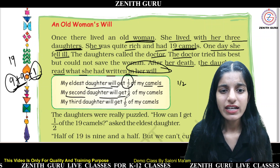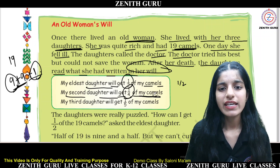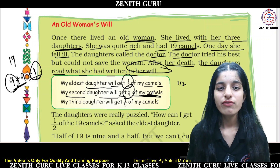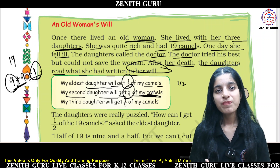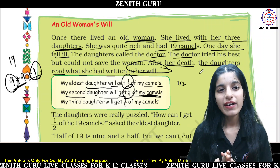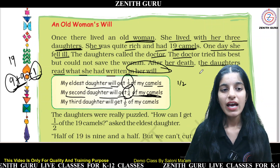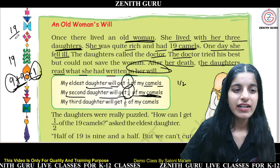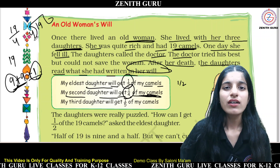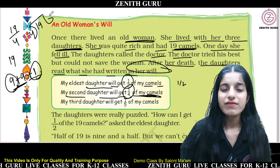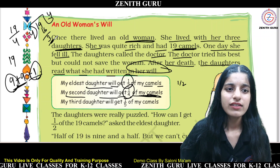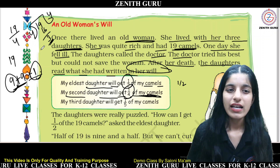My second daughter will get one-fourth (1/4) of my camels. This means we divide 19 by 4. Four fours are 16, and 4 fives are 20 — so four fours are 16, and 3 camels remain. So the second daughter gets 4 camels.